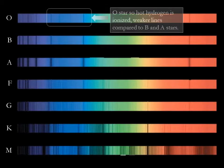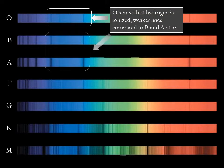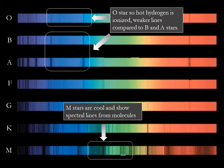Here are examples of the different spectral types. We can see that the hot O star has weak hydrogen lines because the surface temperature is so high that nearly all of the hydrogen is ionized — there's no electron to jump between energy levels. Stars displaying spectral lines of molecules, like this M star, must be cool because molecules would otherwise break apart into individual atoms at higher temperatures.